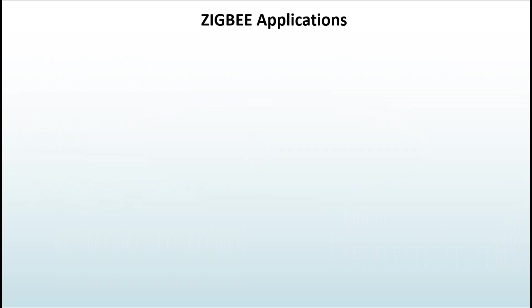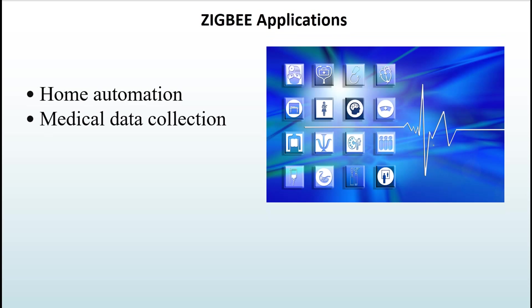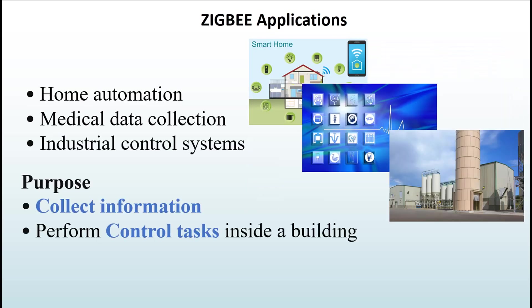The most prominent applications are in home automation, medical data collection, and industrial control systems. The main purpose is to use wireless communication to gather information or perform certain control tasks inside a building — remember, Zigbee was designed for control and sensor type networks.